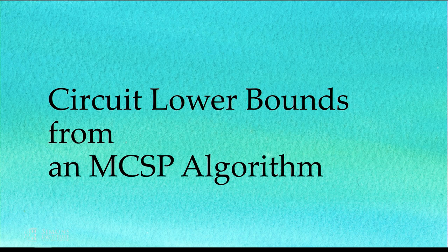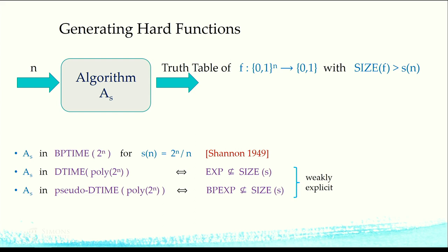What's the connection from MCSP to circuit lower bounds? I view this as an explicit construction question. There are two kinds of explicit constructions: weakly explicit and strongly explicit. I have an algorithm parameterized by some function parameter s, which is given n, and it tries to output the truth table of some function of n variables which has large circuit size bigger than s. Think of s as something like super-polynomial or even exponential in n.